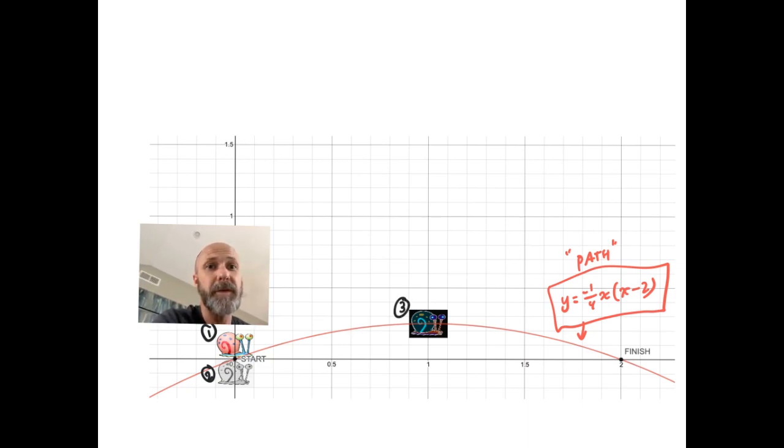So I'll number my snails 1, 2, and 3, so we can kind of keep track. I'll write a set of parametric equations for the first snail, which is regular old Gary. The equations that I used was x₁ = t, so that the horizontal displacement was the exact same as time, and y₁ = -1/4 t(t-2).